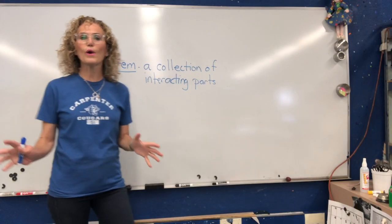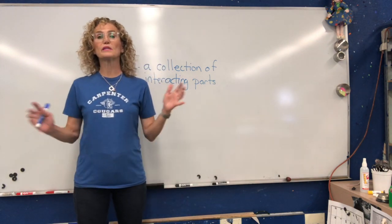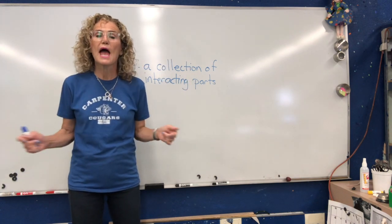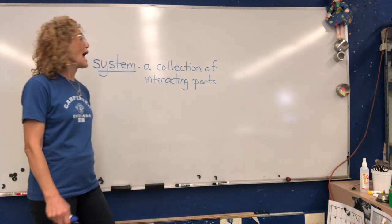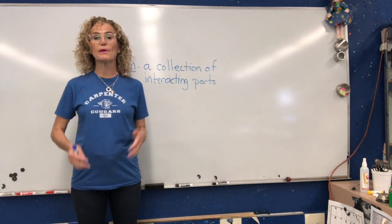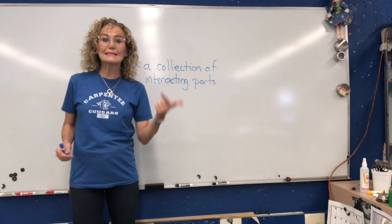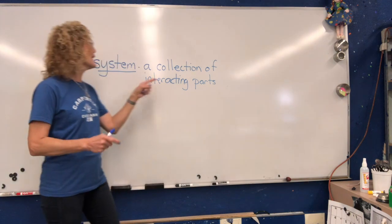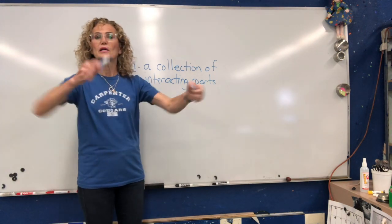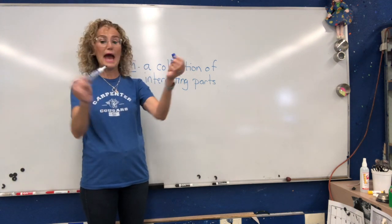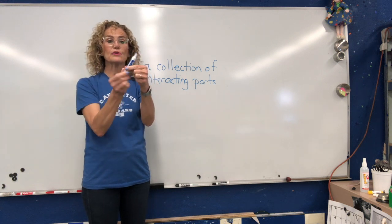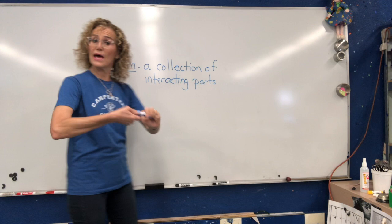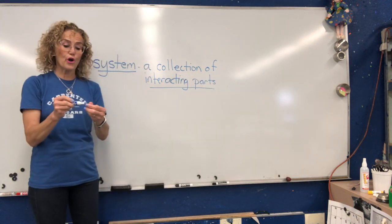Hello, fifth graders. It's Mrs. Balatash, and we are going to start a new unit called Living Systems. There are two important words: living — things that are living — and systems. A system is a collection of interacting parts. We talked about systems in engineering: tools, systems, and processes. A tool is like a spoon, just one part. A system is interacting parts. This marker is a system — it has a cap, a container, a felt tip, and ink inside, all working together so I can write on the board.